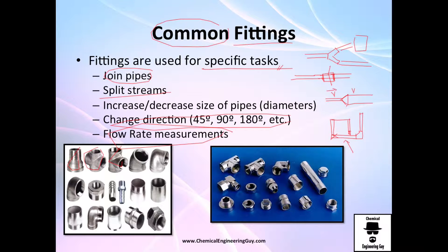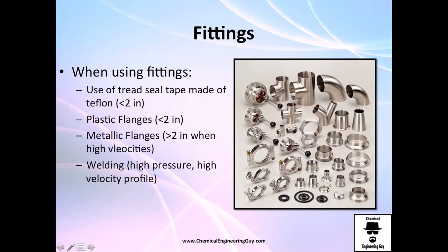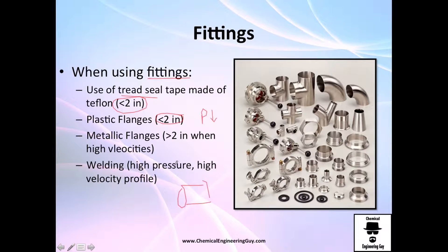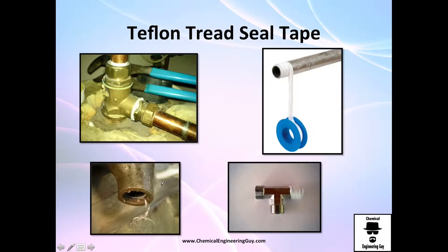This is an elbow for changing direction, and so on — you can have many different types depending on the piping system. When using fittings, depending on the size, you may use thread seal tape — this is a small one. You may also use plastic flanges when working with small, low-pressure systems. But when you have a big piping system, you will start using metallic flanges and welding — you need to literally weld and join the metals in order to sustain high pressure and high velocity.